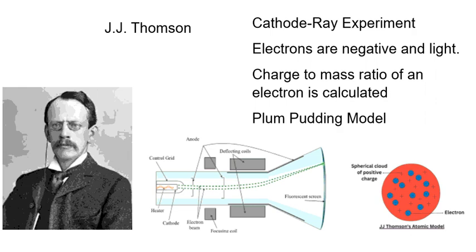The first experiment comes with J.J. Thompson. He used a cathode ray tube in order to subject electrons to electric fields and he discovered that electrons are negative and light. He also calculated the charge to mass ratio of an electron.